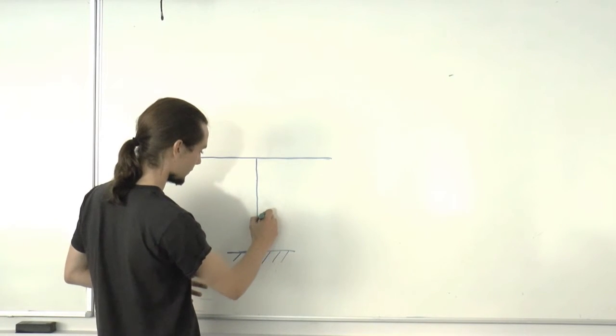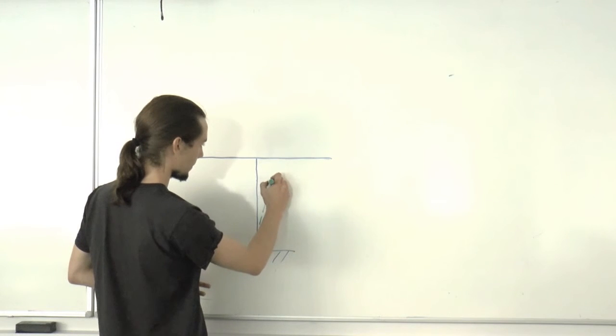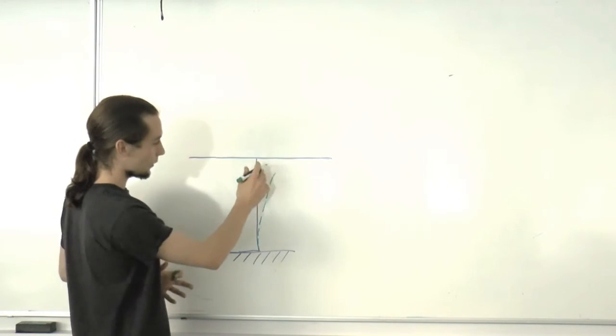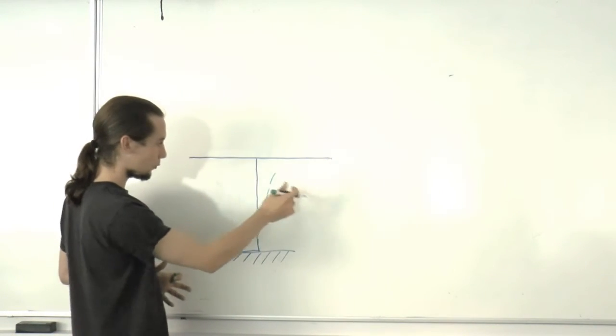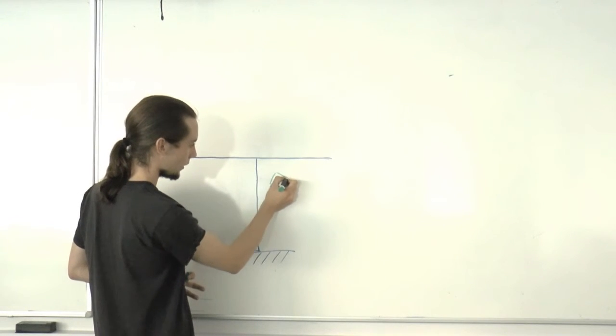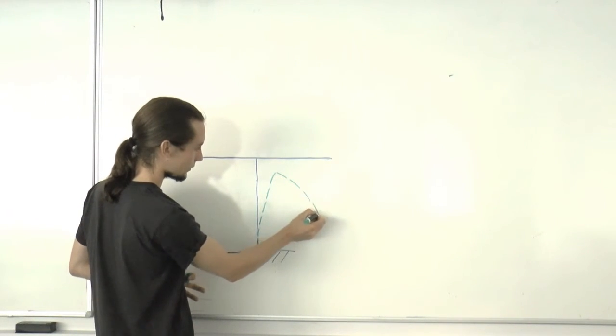So we're going to see deflection like this to the top. There's going to be curvature downwards here all the way to the point.